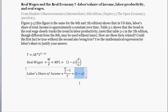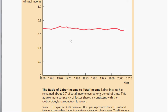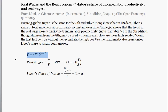Labor share of income equals this figure. Let's go look at figure 5.3. This is labor share of income, and you can see that since 1960 it was about 0.7 — it's kind of gone up, kind of gone down, the trend is maybe a little bit down, but it's stayed pretty steady. The ratio of labor income to total income has remained about 0.7 over a very long period of time. This consistency in factor shares is consistent with the Cobb-Douglas production function, which lends support to using it.